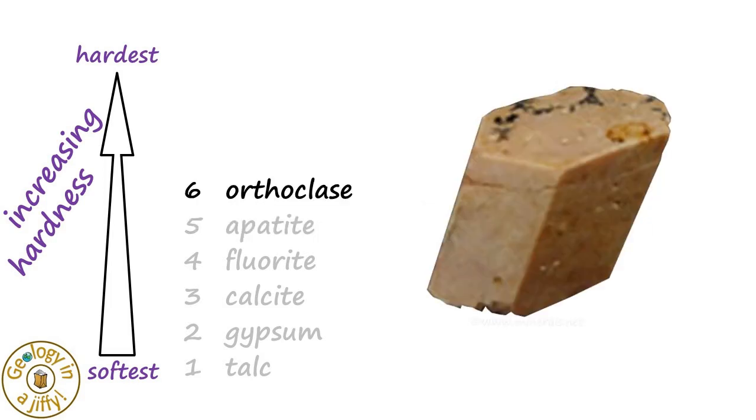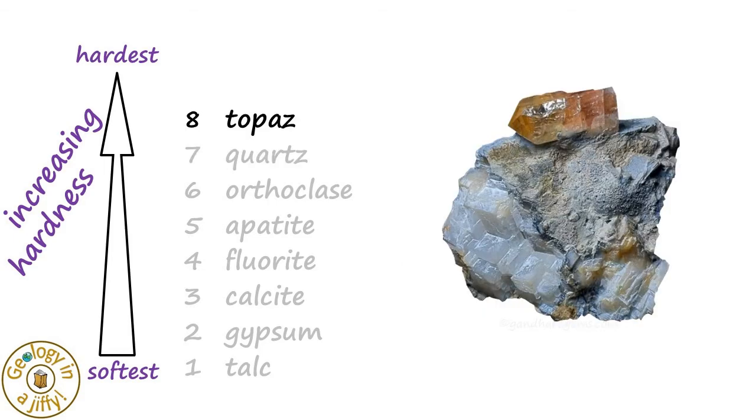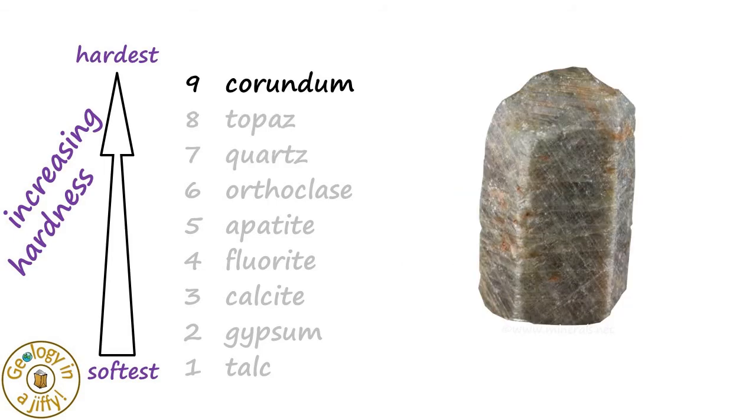Then orthoclase, a type of potassium feldspar. Then quartz, a mineral commonly found in sedimentary rocks and in granitic igneous rocks. Then topaz, used as a gemstone. Then corundum, including its variants of ruby and sapphire.